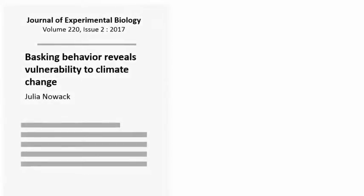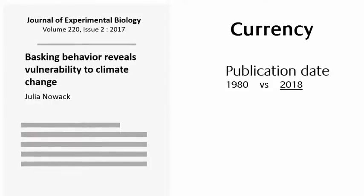Let's use this citation for a journal article as an example. First, look at the currency of the source — when was it published? If you need information on a current topic or based on the latest research, make sure it was published recently.